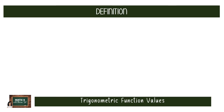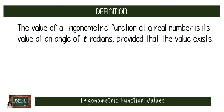What do we mean when we say we have to determine the trigonometric function value of a real number? Remember when you evaluated f(x) in grade 9 by replacing x with a given value? We will do the same for trigonometric functions — evaluating them given a real number t. We define the value of a trigonometric function at a real number as its value at an angle of t radians, provided that the value exists.